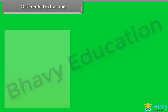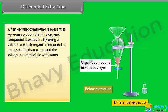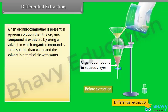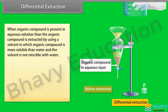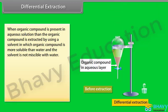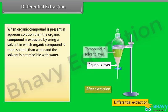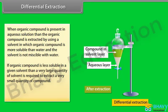Differential extraction: When an organic compound is present in an aqueous solution, it is extracted by using a solvent in which the organic compound is more soluble than in water, and the solvent is not miscible with water. If the organic compound is less soluble in a given solvent, a very large quantity of solvent is required to extract a small quantity of the compound. This technique is known as continuous extraction.